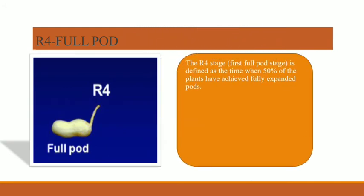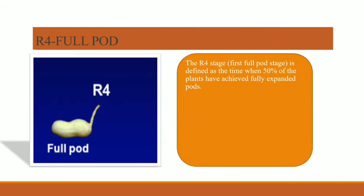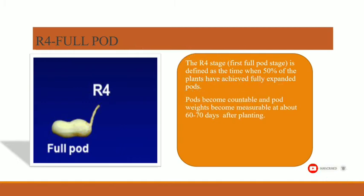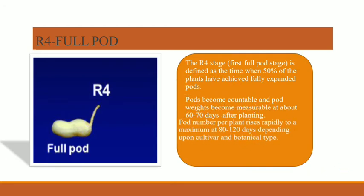The full pod stage, R4, is defined as when 50% of the plants have achieved fully expanded pods. Pods become full and pod weight is measured at 60 to 70 days after planting. The pod number per plant raises rapidly to the maximum at 80 to 120 days, depending upon the cultivar and botanical type.